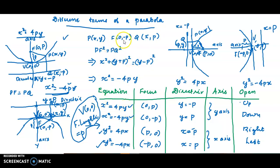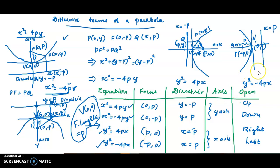Since the focus is (0,-p) and the directrix is y = p, the equation changes to x² = -4py. The roles of x and y are interchanged for the other two variables: x² = 4py, y² = 4px, x² = -4py, and y² = -4px. These are the four forms of a parabola.